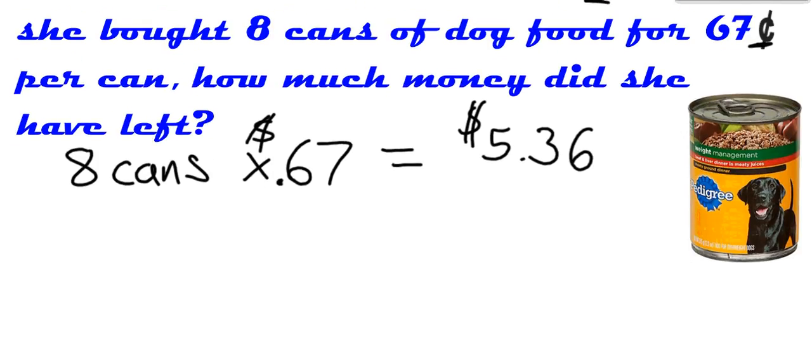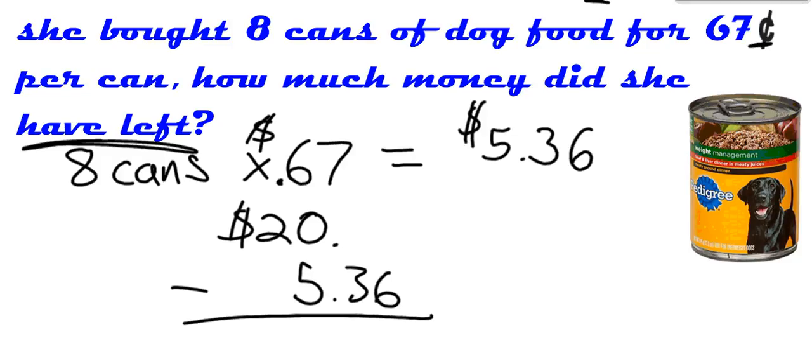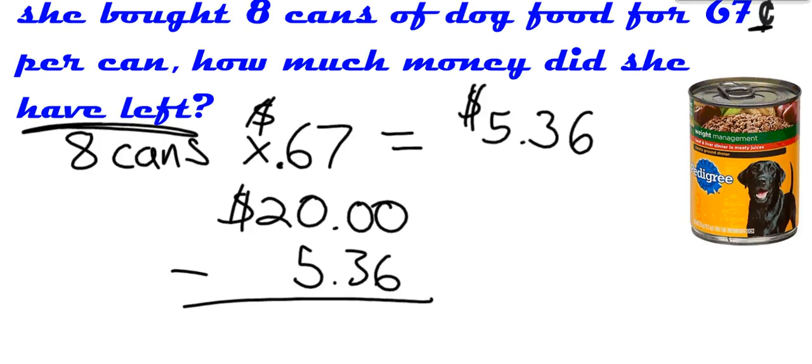So he spends $5.36 on this dog food. This does not really sound like the most nutritious kind of dog food to be buying if it's only $0.67. Maybe that's a little dog. I don't know. So anyway, now we've got to say, well, how much money did she have left over, right? That's what we want to know. So she brings the $20 bill, right? And then we're going to subtract that now from our $5.36. Throw that stuff in there so I can see my place values. All right, and I subtract.